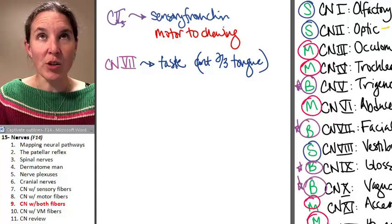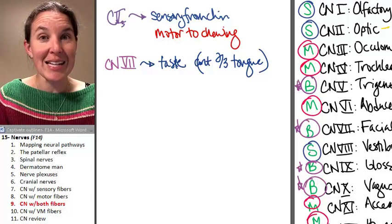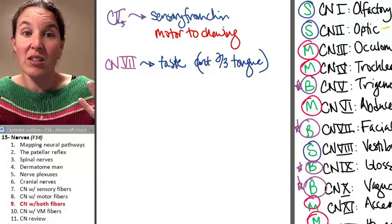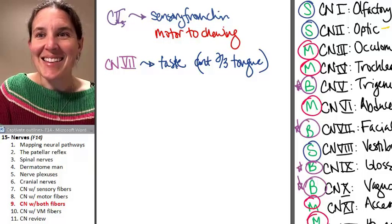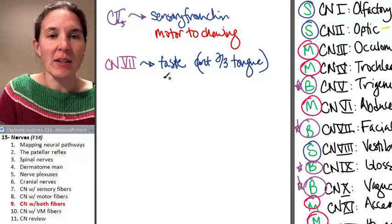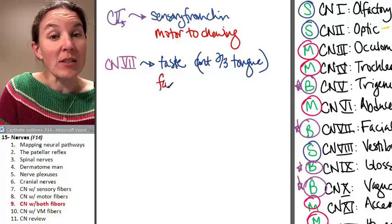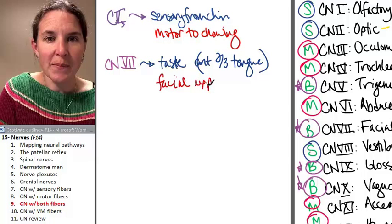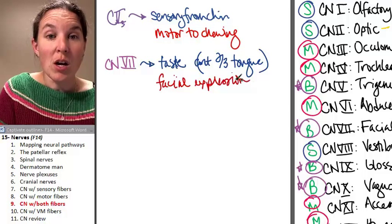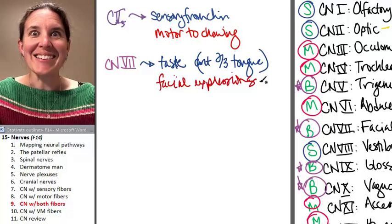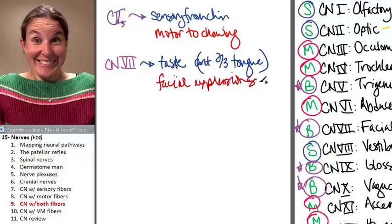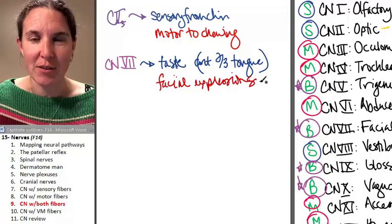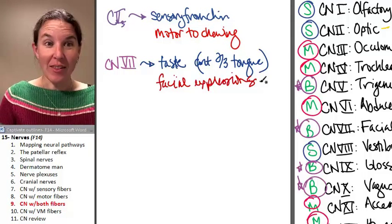Facial, so how are you going to remember? Facial does taste on the anterior two-thirds of your tongue. It's the biggest chunk of taste. And then, this is good, I totally will remember this. It does facial expressions. I will remember that facial does facial expressions, and that's motor, and then it allows you to make faces about what you just ate and taste it with your anterior two-thirds of your tongue. I think I might remember that.